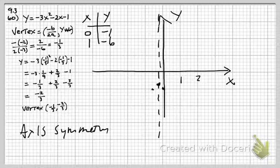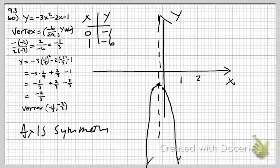So the point (1, negative 6) is going to be off my graph down here, and the symmetric point will be the same distance off the graph on the other side. That should give me enough points to go ahead and make a smooth graph. I'll start at the vertex and sketch the general shape of the parabola. And that would be good enough.